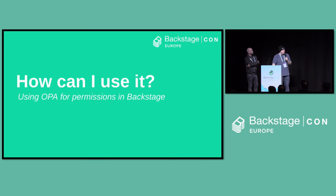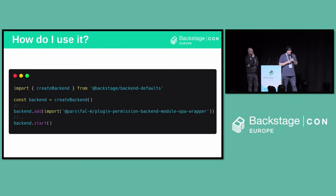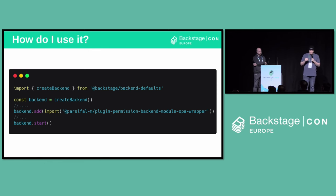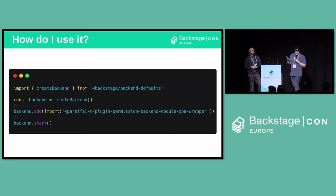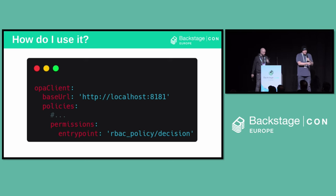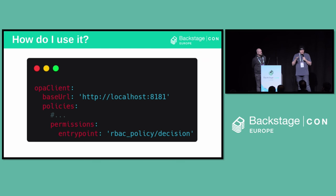How can you use it? With the new backend system — which is amazing — it's literally just one line. With the old backend system it's a little more work. You just import this one line, and provided you have the permissions framework up and running, you're basically good to go if you also have OPA running next to it. The only config you need is pointing the base URL to wherever OPA is — generally next to your Backstage deployment, deployed as a sidecar — and an entry point, which is the rule head you want to evaluate against.